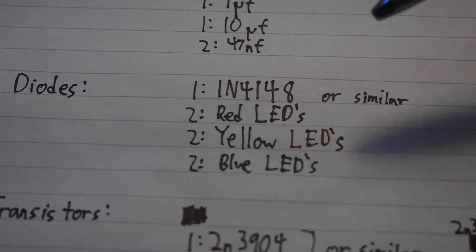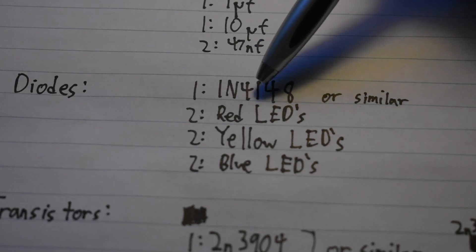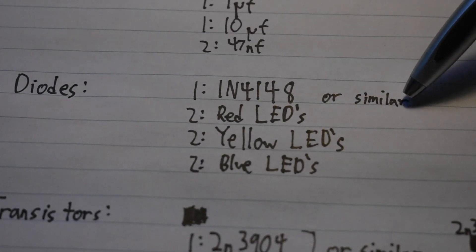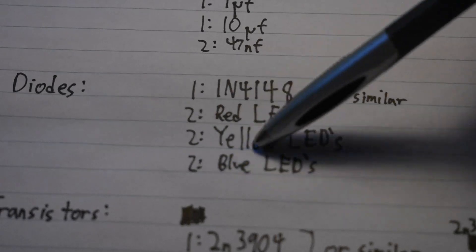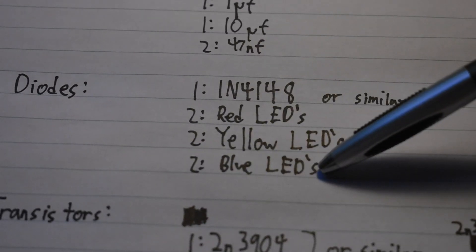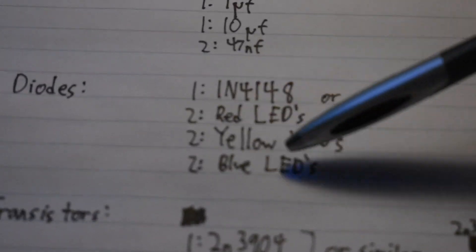For diodes, you will need one 1N4148 or similar, two red LEDs, two yellow LEDs, and two blue LEDs. You can always switch out the colors for these LEDs.